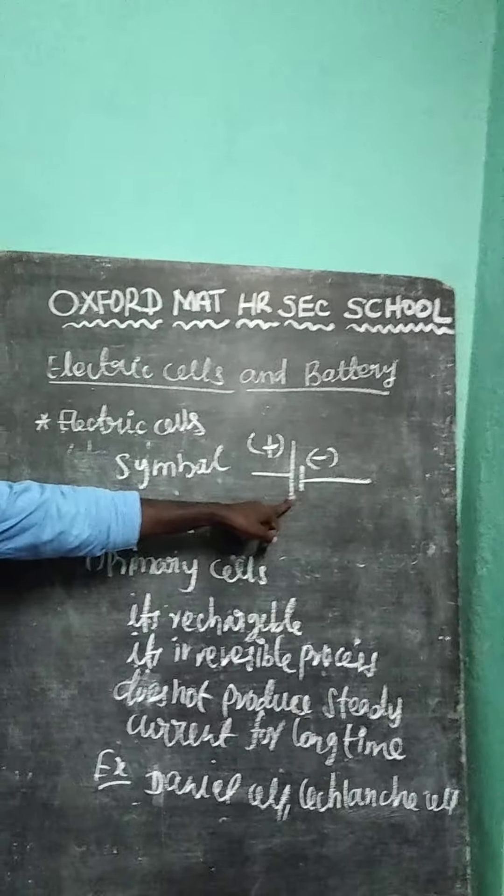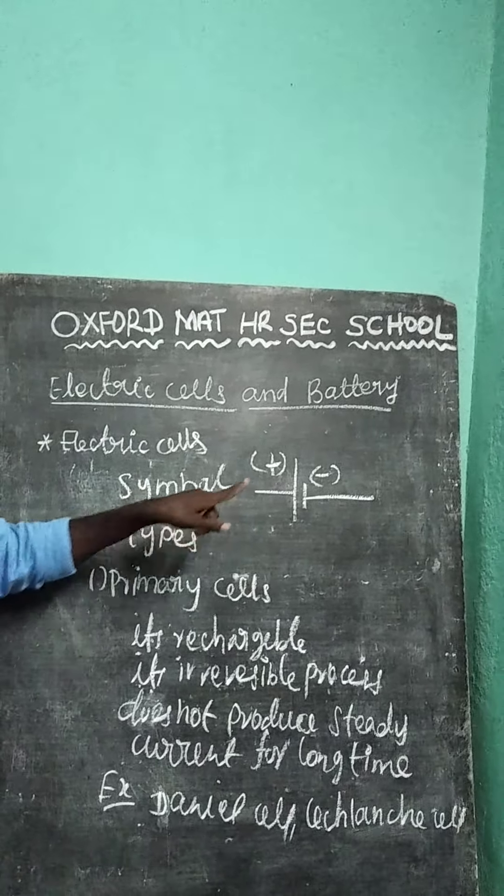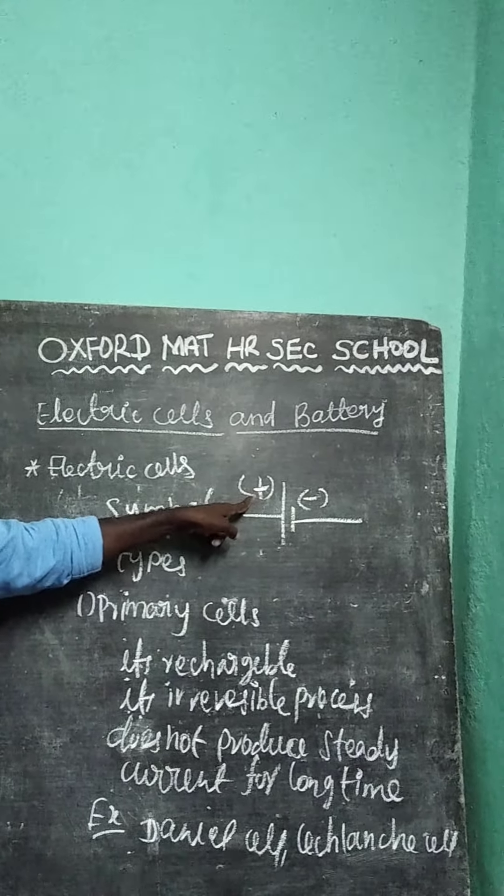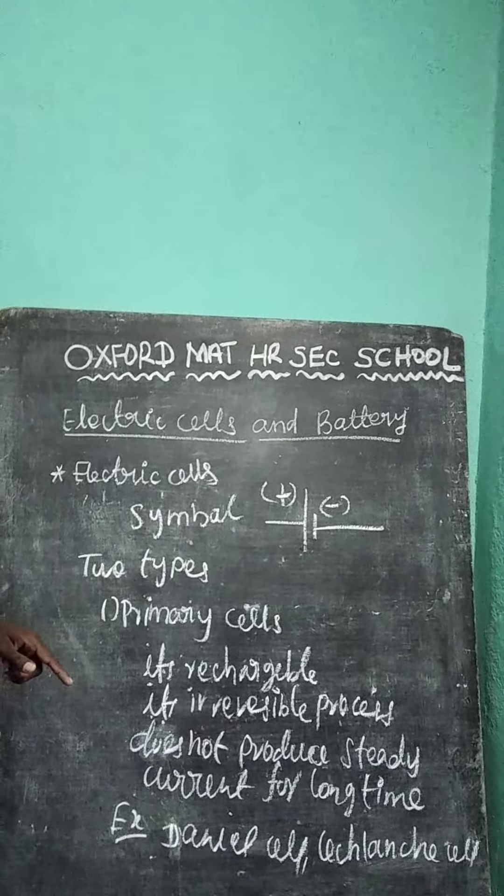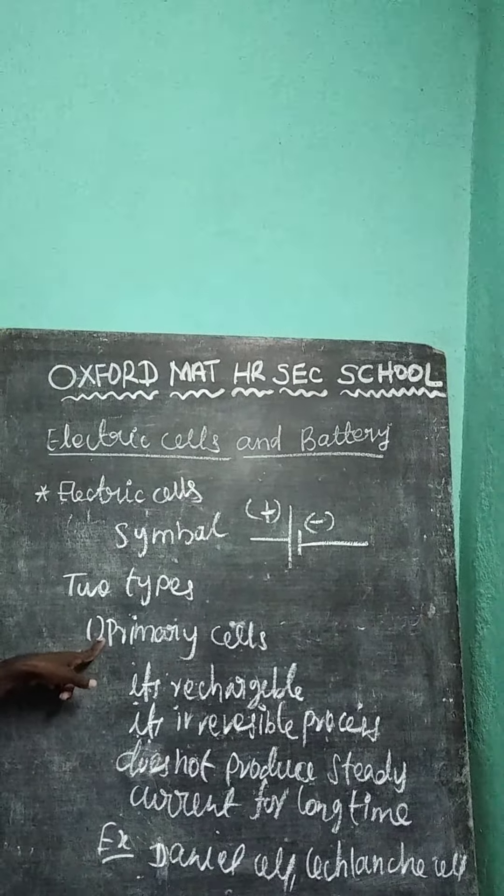Next, electric cell symbol. This is electric cell symbol. It has two terminals. One is positive terminal. Second one is negative terminal. It has two types of electric cell. One is primary cell and the secondary cell.